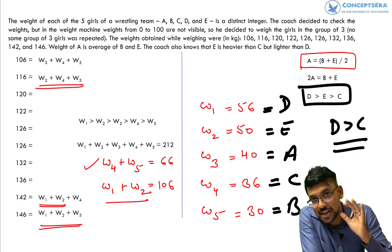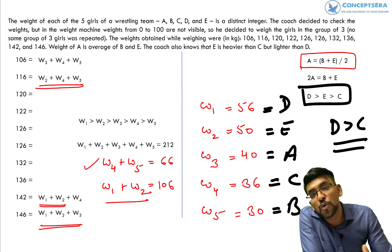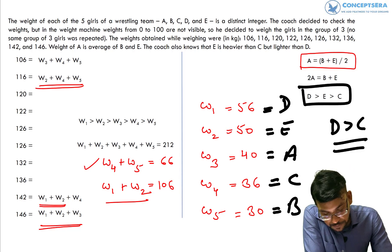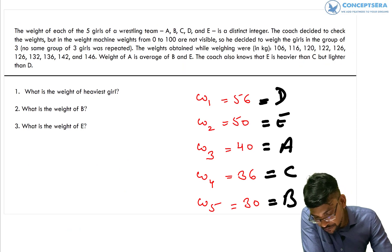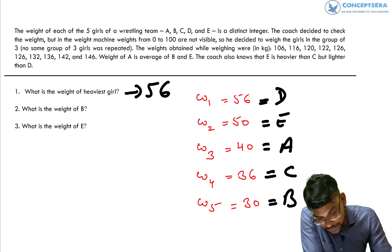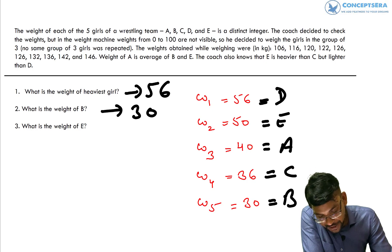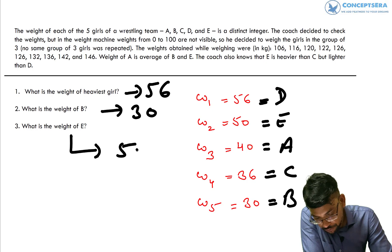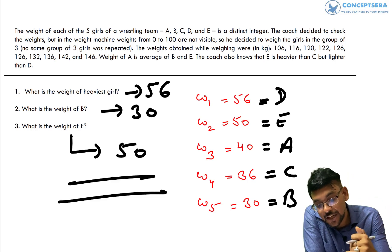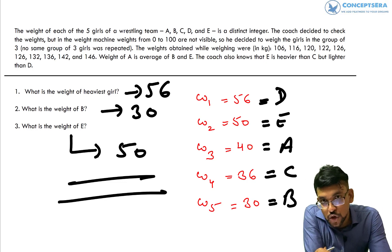All letter-decoding caselets like this are easy caselets and you should attempt them in round 1 of your paper. Now let's answer the questions: What is the weight of the heaviest girl? The answer is 56. What is the weight of B? B = 30. What is the weight of E? E = 50. This caselet is easy to moderate in difficulty when you follow the systematic pattern we discussed. Thank you so much.